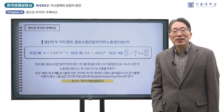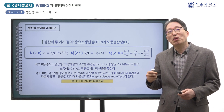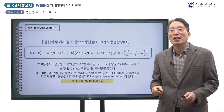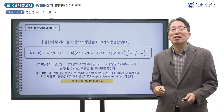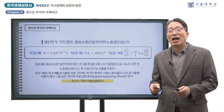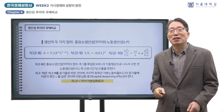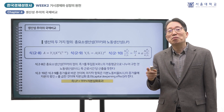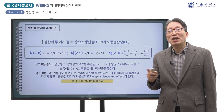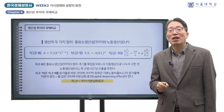TFP는 노동과 자본의 투입 요소를 얼마나 효율적으로 활용하고 있는지를 측정한다면, LP는 노동 단위당 산출 수준을 측정하는 것이므로 1인당 소득이나 생활 수준의 변화를 잘 보여준다고 할 수 있습니다. 즉 두 생산성 지표가 포착하는 측면이 다르므로 상호 보완적으로 활용할 수 있습니다.